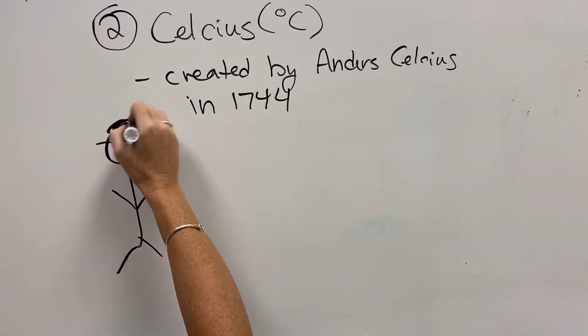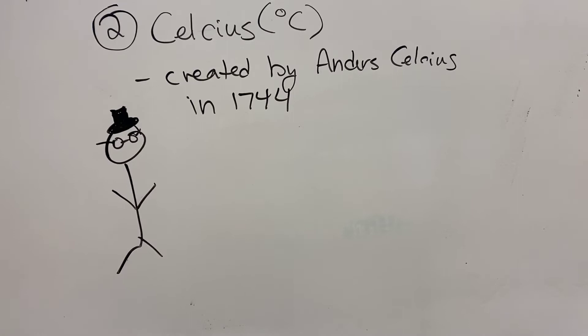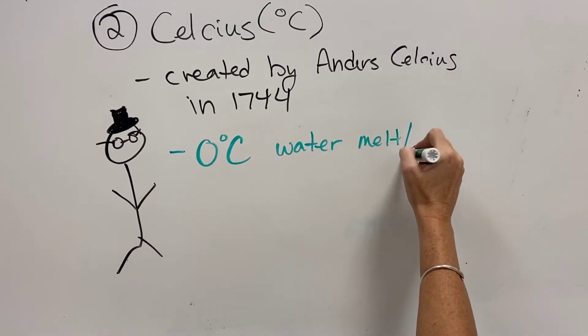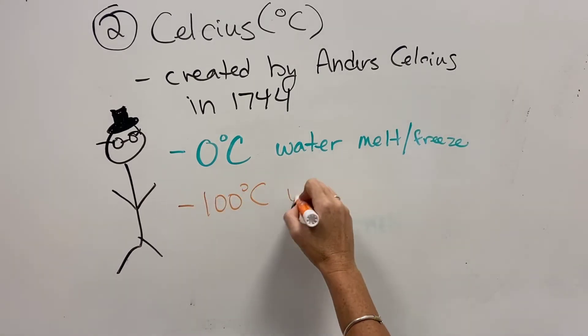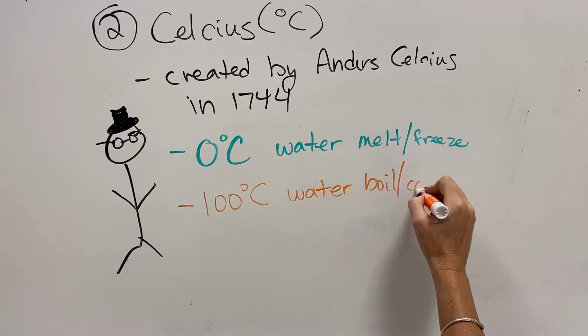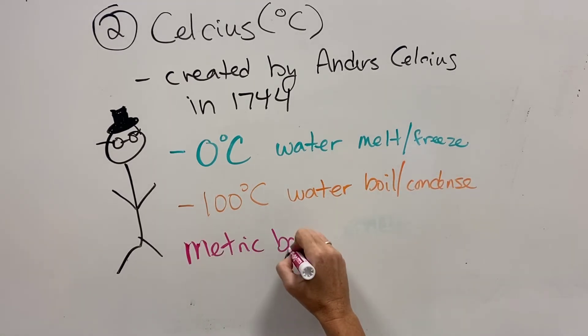So along comes a guy named Anders Celsius. And 1744, a couple decades later, creates the Celsius system during the scientific revolution and things that were happening around the world when people were creating the metric system. So the metric system being based off of water, Anders decided to make a system where zero degrees was the temperature that water melted and froze, that 100 degrees is the temperature that water boils or condenses.